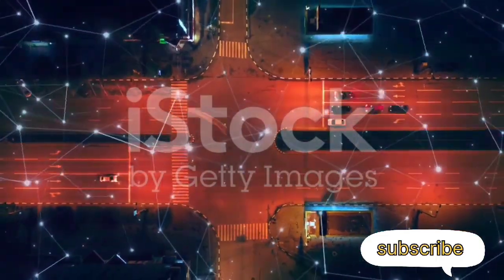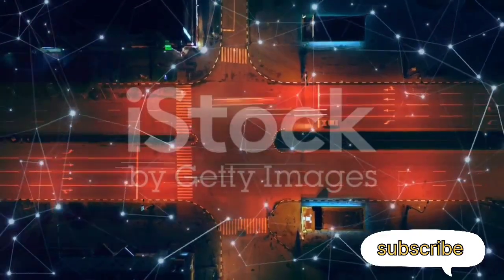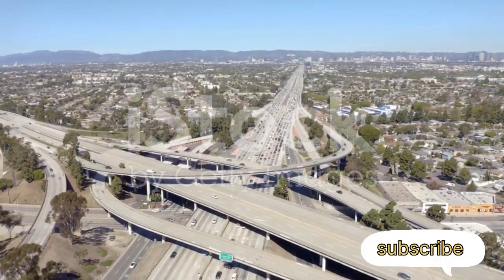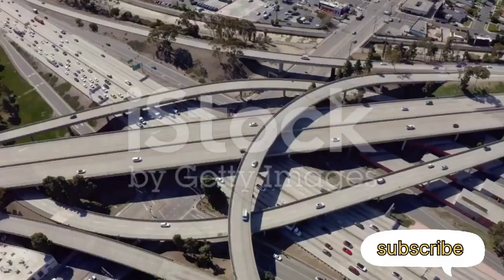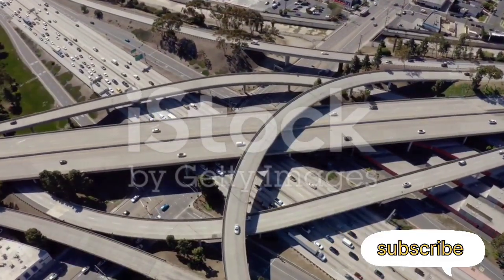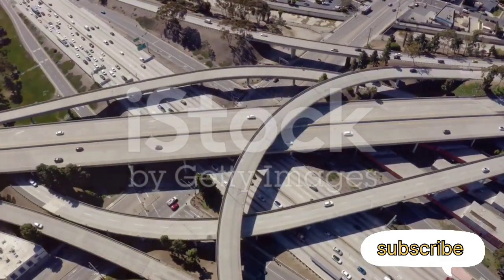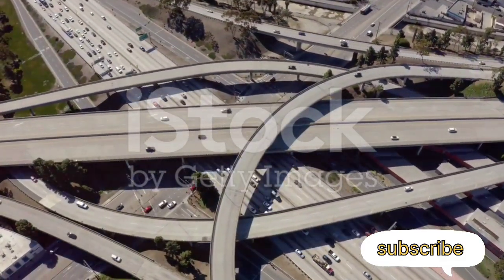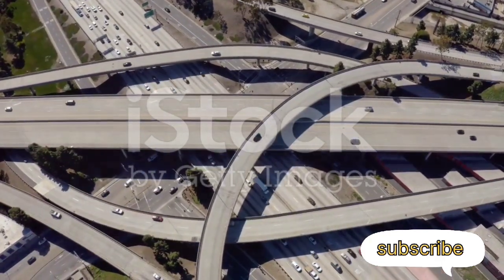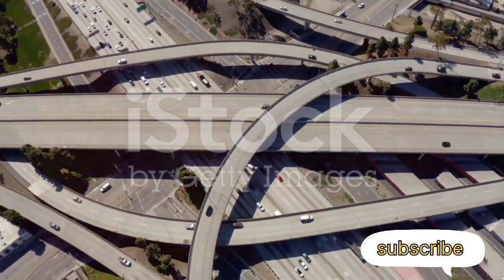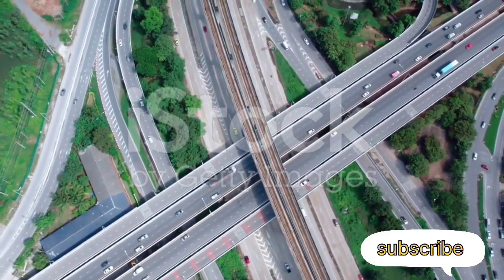Enter nerves and ganglia, the highways and junctions of our body's communication network. Nerves are like the major highways of our body, composed of bundles of nerve fibers, or axons. These are the long, slender projections of neurons that carry electrical impulses. Just as highways connect different parts of a city, nerves connect different parts of our body, allowing neurons to communicate with each other and with other cells, like muscle cells.